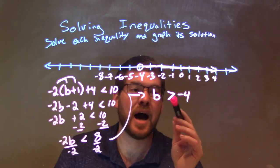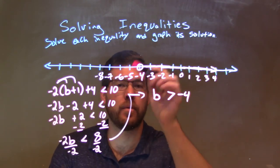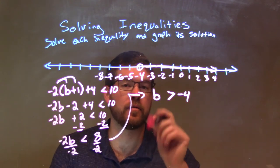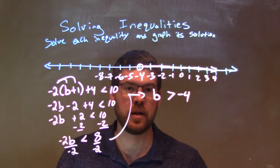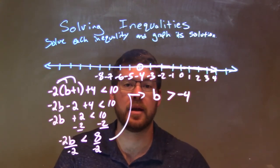So, b is not equal to negative 4, so we get an open circle there. Since b is greater than negative 4, we shade to the right. So, our final answer here is just b is greater than negative 4.